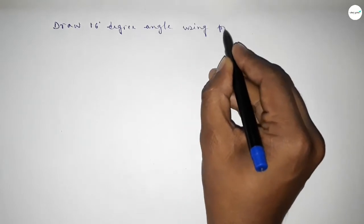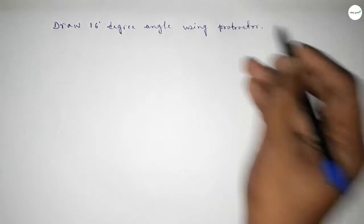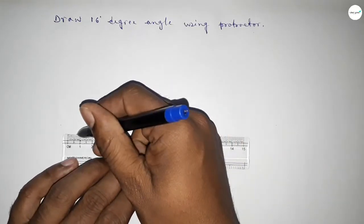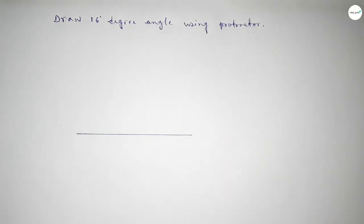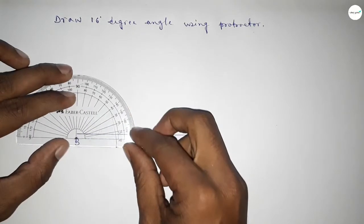So constructing 16 degree angle, let's start the video. First of all, we have to draw here a line of any length and taking here point B and here C. Now putting the protractor on the point B and counting 16 degrees.